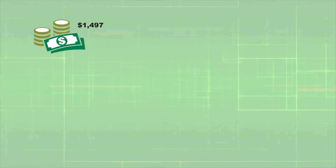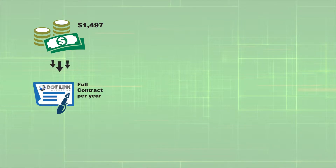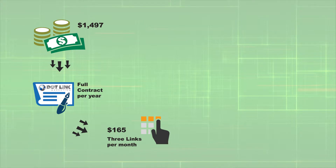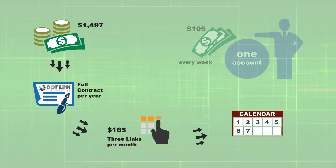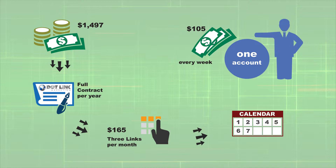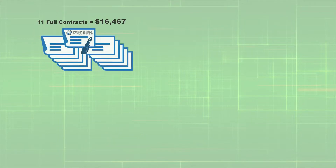Hello, this is Scott with .link Marketing. This next video is entitled Payout and Commissions. With an initial investment of $1,497 for one contract, you are obligated to maintain a purchase of three daily link chains for a total monthly cost of $165. Click and complete the link chains every day for seven consecutive days and you will receive $105 per week.